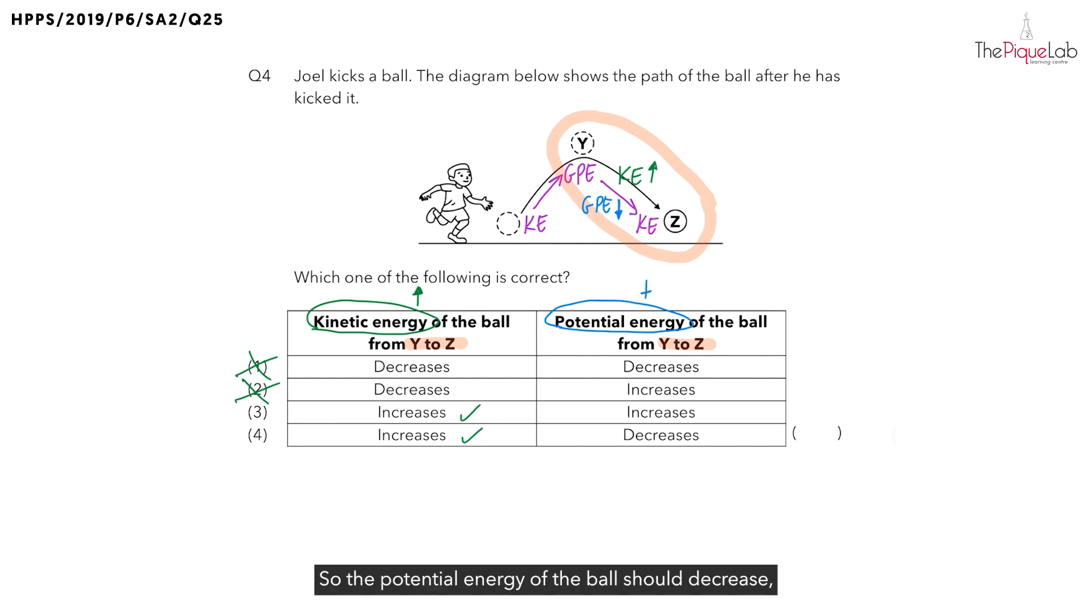So the potential energy of the ball should decrease, giving us our answer as option 4.